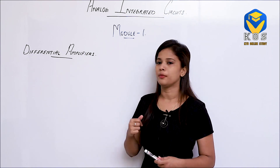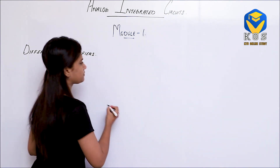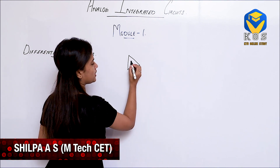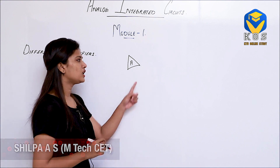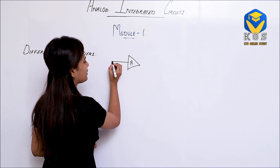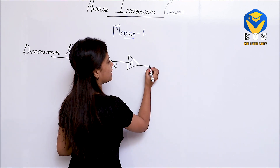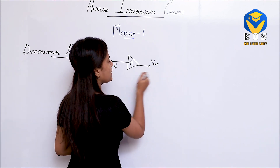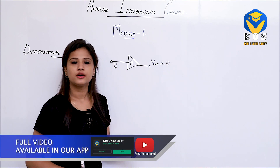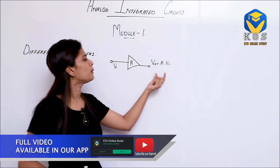What do you think is an amplifier or an amplifying device? I am considering an amplifier with a gain represented by A. On the input side, I am giving a signal Vi. The output signal V0 will be equal to the gain multiplied by the given input signal, so the output will be A into Vi.